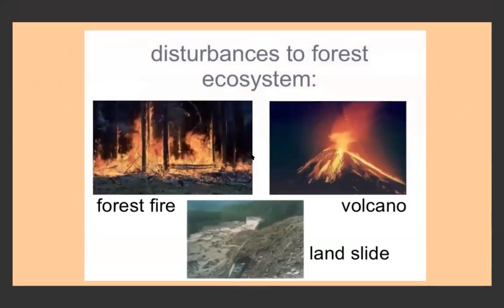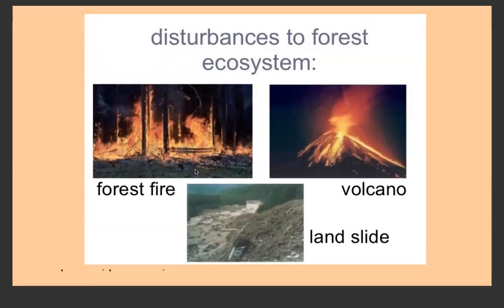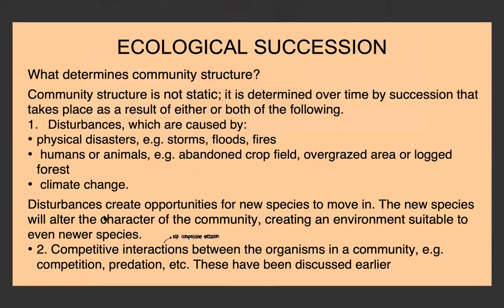Examples of disturbances include volcanoes, landslides, and forest fires. The other thing that determines community structure is competitive interactions, something like competitive exclusion, which we talked about in the previous video. These occur between the organisms in a community — interspecific competition, which is between different species, and intraspecific competition, which is within one species — and also things like predation.